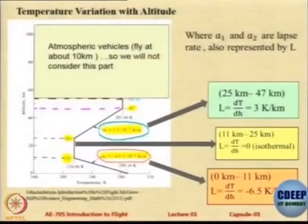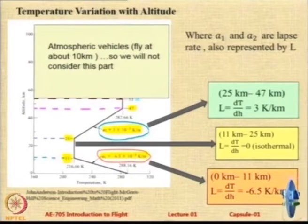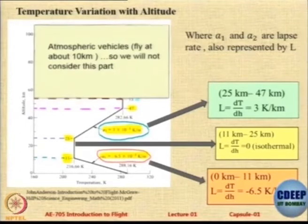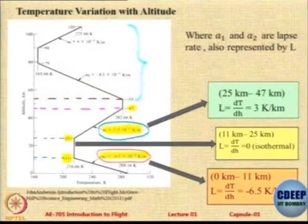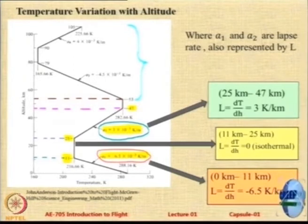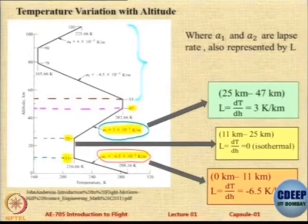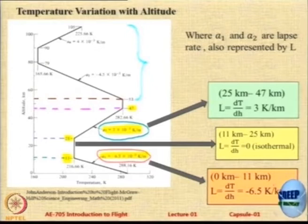In the isothermal layer, which is from 11 to 25 kilometers generally, temperature remains constant. In the next layer from 25 to 47 kilometers, it increases by 3 degrees Kelvin per kilometer. Above that, up to 53 kilometers, again it remains constant. Beyond that we do not care because we will hardly look at aircraft which fly beyond 50 kilometers. You are not expected to remember all values, but at least remember: up to 11 kilometers it reduces, remains constant up to 25, and beyond 25 up to 47 it becomes 3 degrees per kilometer. After that I do not expect you to remember.